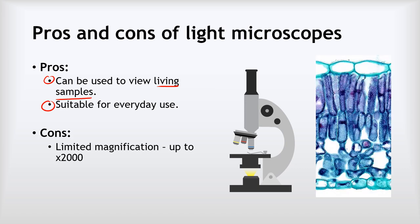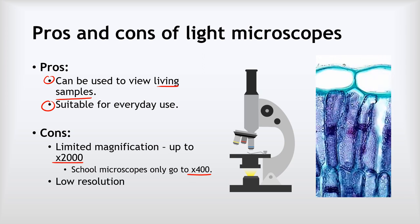The cons though. Big con number one is that they've got limited magnification. Even the very best light microscopes only go up to about 2,000 times magnification. The standard ones we use in the school science lab only go up to about times 400 magnification. The other big downside is about having a low resolution, so the images can seem quite blurry. If you look at this image here, even though it's got a big magnification it's quite blurry. You can't really see distinct detail. All the different parts of it kind of merge into one another.